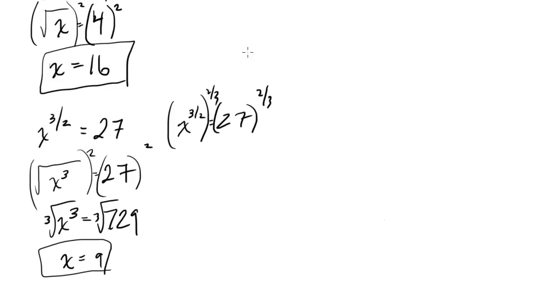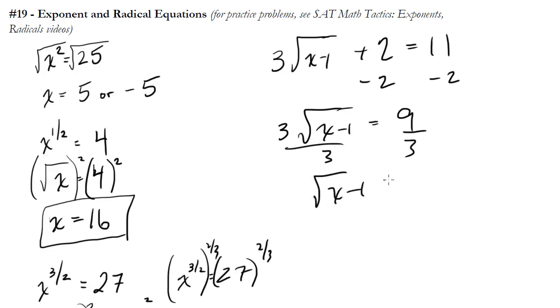Let's look at another example. How about something like 3 times the square root of x minus 1 plus 2 equals 11. So again, unwind everything like we know in algebra. Let's leave the square root to the end. Let's just get the square root by itself because if we squared both sides now, we're going to get a horrible mess. So let's first subtract 2 from both sides. And I get 3 square root of x minus 1 equals 9. Divide both sides by 3. I'm going to get square root of x minus 1 equals 3.